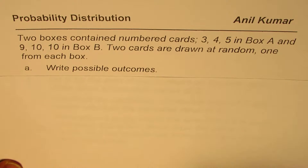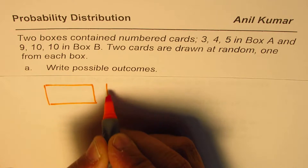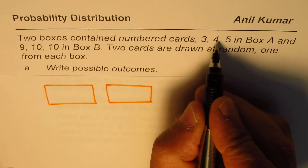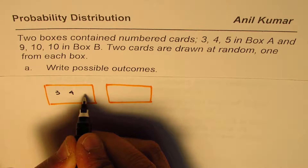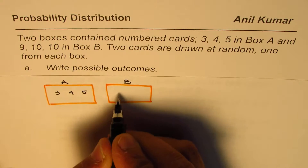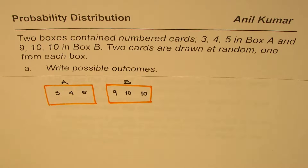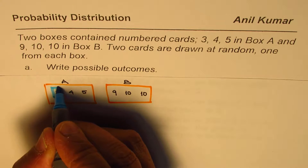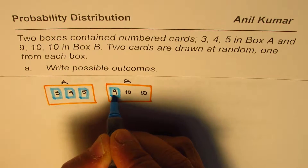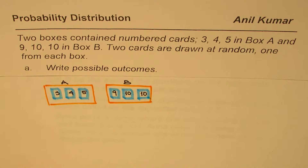The question has two boxes which contain cards. Box A contains cards numbered 3, 4, and 5. Box B contains cards numbered 9, 10, and 10. We are drawing one card from each box — so two cards are drawn at random.